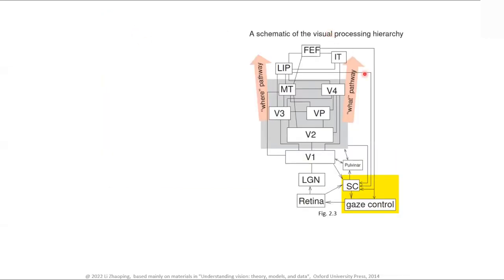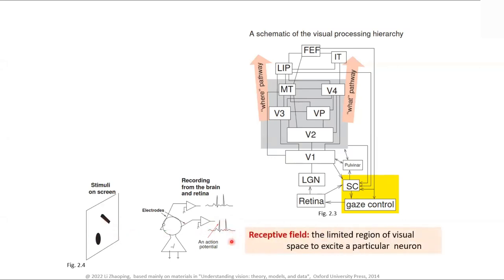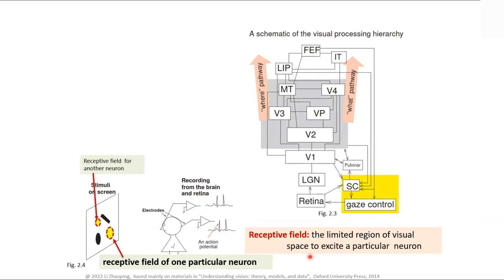Physiologically, you put the animal in front of a screen and shine things on it while recording from a neuron. Whatever bits on the screen make a neuron fire is defined as the receptive field — the limited region of visual space that can excite a particular neuron. One neuron has a field here, another neuron has a field there — different neurons cover different positions. To sample the whole screen you need different neurons devoted to cover the whole visual field.